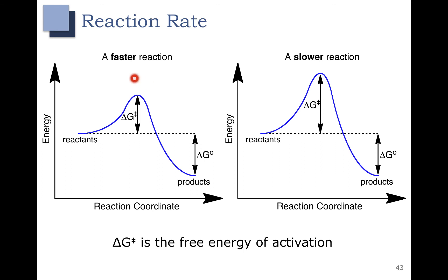A faster reaction has a smaller delta G double dagger, or a smaller free energy of activation. This means that this reaction is going to proceed a lot faster. If you think about this as a bike — if you're biking up a small hill, it's going to be a lot faster than if you have to go up a much higher hill. That's why we have our faster reaction over here on the left.